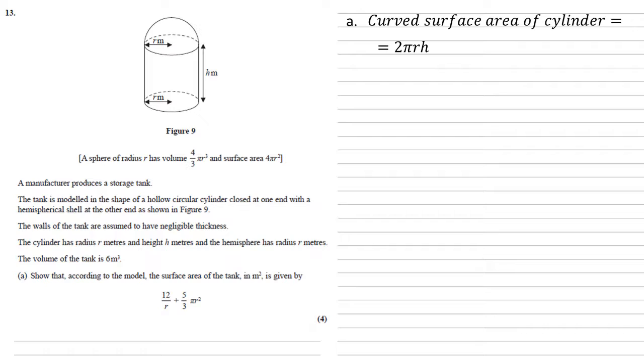We know that the curved surface area of the cylinder is given by 2πrh. Remember that's just the circumference of the circle at the bottom, times by the height h. We know that the surface area of the cylinder's base is πr², because it's a circle.